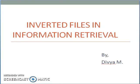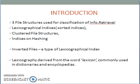Good afternoon everyone. Let's discuss inverted files in information retrieval. Basically, there are three file structures which are used for classification of information retrieval. The first type is lexicographical indices which are sorted. The second one is clustered file structures and the third one is indices on hashing.